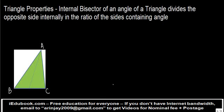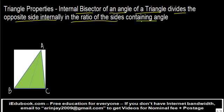In this video, we are going to understand about the internal bisector of a triangle and some of the properties of that. The internal bisector of an angle of a triangle divides the opposite side internally in the ratio of the sides containing the angle.